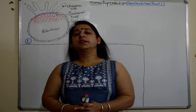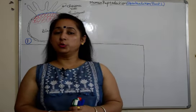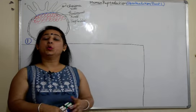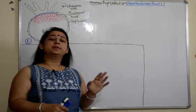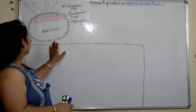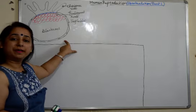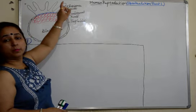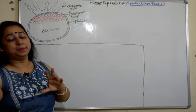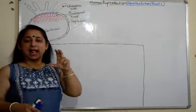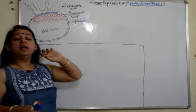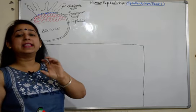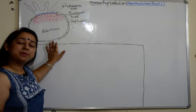Hello everyone. This video is in continuation to our videos on human reproduction for grade 12, wherein we are discussing the various post-fertilization changes. We have discussed blastula formation and implantation. In the previous video we discussed that chorionic villi are formed and embed themselves in the endometrium — this process is known as implantation.